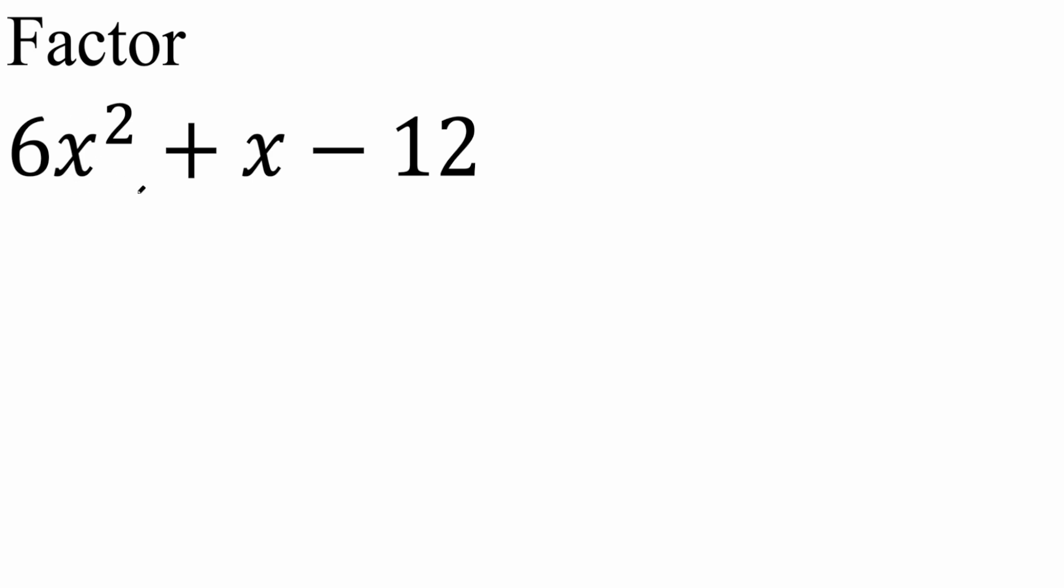So here we have 6x squared. Now there's a couple of ways to get 6x squared, you know, x times 6x, 2x times 3x, and that's why this process is called trial and error. So I'm just going to try something, it could be right, it could be wrong, I'm going to say 2x and 3x. But again, it could be 6x and 1x.